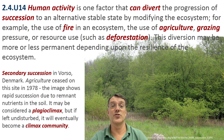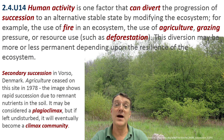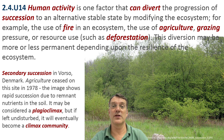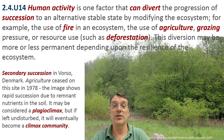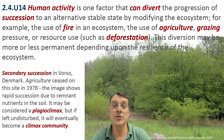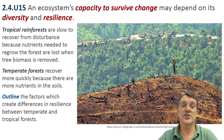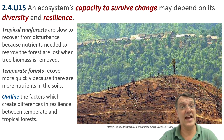Human activity can divert succession to alternative stable states by modifying ecosystems. Activities like agriculture, grazing, fire management, or deforestation can create what ecologists call a plagioclimax community — a stable state maintained by continued human intervention. If human activity stops, as in this field in Denmark, secondary succession will begin.